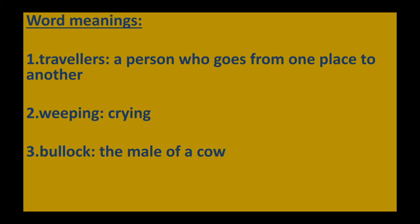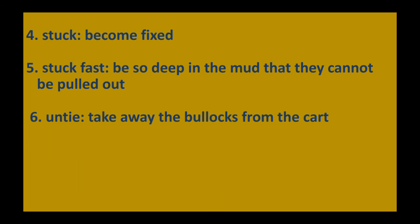We are going to do this part of the lesson today. Let's go to the word meanings. Travellers — a person who goes from one place to another. Weeping — that is crying. Bullock — the male of a cow. Stuck — become fixed. Stuck fast — be so deep in the mud that they cannot be pulled out. Untie — take away the bullocks from the cart.